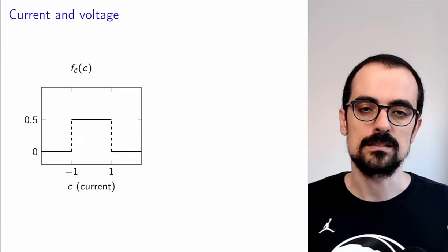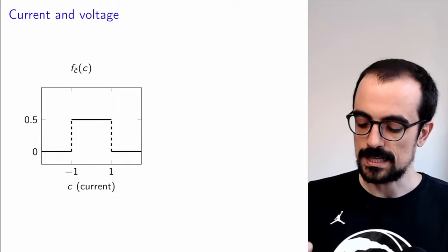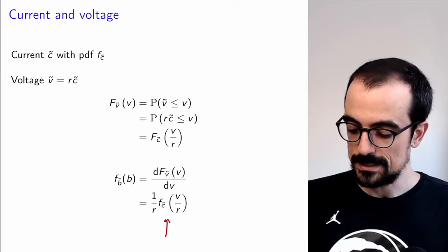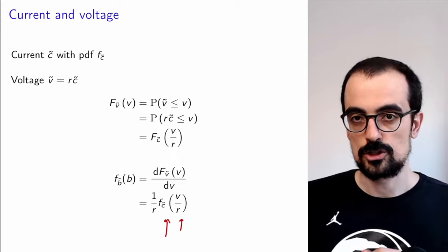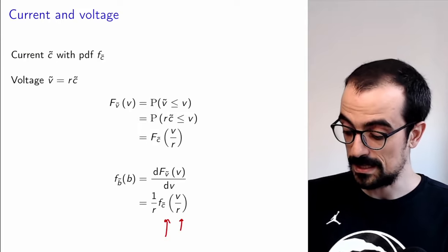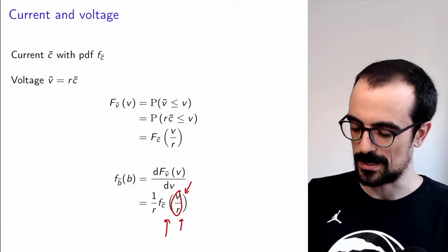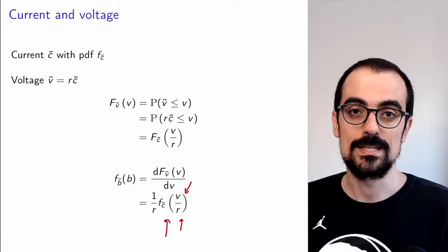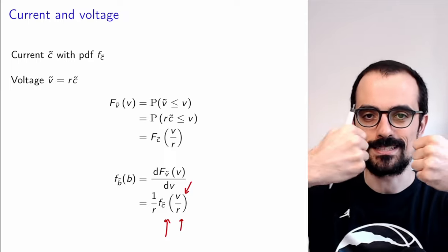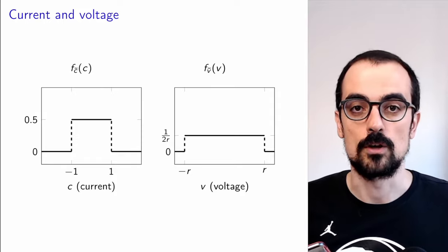As an example, since we derived this for an arbitrary PDF of C, this will hold for any possible PDF the current may have. Let's imagine the current is uniform between -1 and 1. We apply the formula — if the PDF of C is non-zero between -1 and 1, the PDF of V will be non-zero when V/R is between -1 and 1, which happens between -R and R. So the PDF is being spread out if R is greater than 1, or compressed if R is smaller than 1.